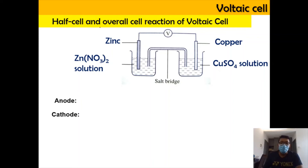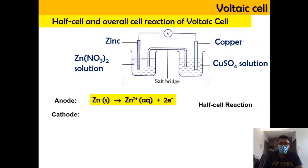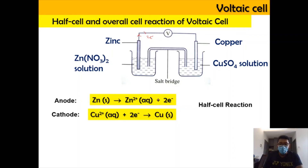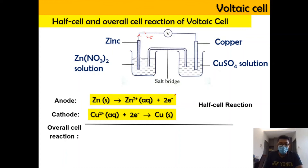Now we're going to write the half cell and overall cell reaction for the voltaic cell. At anode, the half cell reaction is: Zn(s) → Zn²⁺(aq) + 2e⁻. At cathode: Cu²⁺(aq) + 2e⁻ → Cu(s). To produce the overall cell reaction, we cancel out the 2 electrons on both sides and add the equations, giving: Zn(s) + Cu²⁺(aq) → Zn²⁺(aq) + Cu(s).